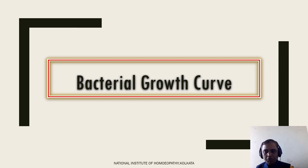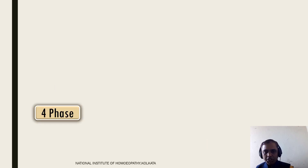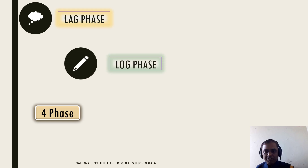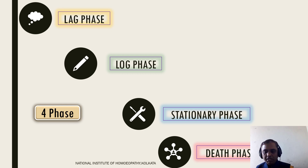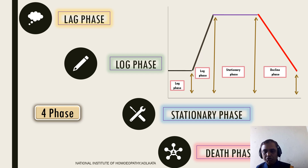The bacterial growth curve is divided into four phases. The first phase is the lag phase, the second is the log phase, the third is the stationary phase, and the fourth is the death (decline) phase. On the graph, the x-axis represents time and the y-axis represents the number of bacterial cells.